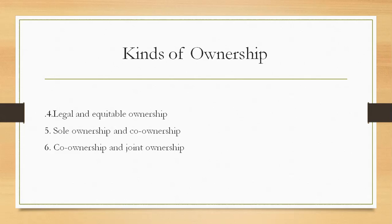Co-ownership and joint ownership are very important, especially in Hindu law. Co-ownership can assume two forms: ownership in common or joint ownership. The most important difference between these relates to the effect of death of one of the co-owners. In ownership in common, the right of the dead owner descends to his successors like any other inheritable right. But on the death of one of two joint owners, his ownership dies with him and the survivor becomes the sole owner by virtue of the right of survivorship.